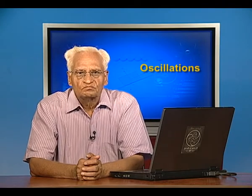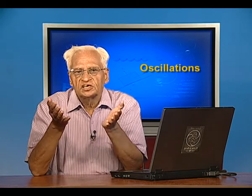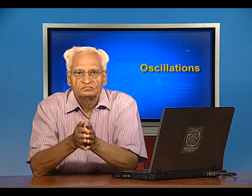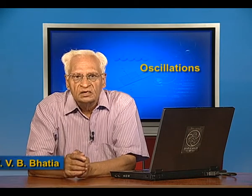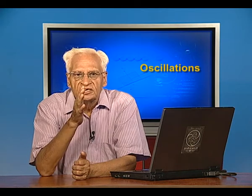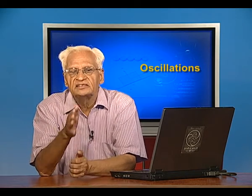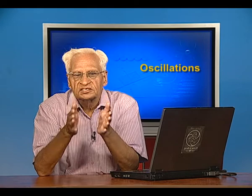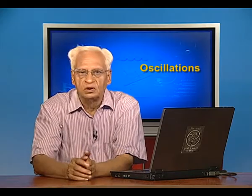We continue with oscillations. In the last lecture we learnt what an oscillation is and we learnt that oscillations of a system can take place only about a position of stable equilibrium. We also learnt the characteristics of simple harmonic motion: the acceleration of the system is proportional to the displacement and is in the direction opposite to the displacement. Now we shall apply these concepts to do examples and then we shall see how two or more simple harmonic oscillations can be combined.